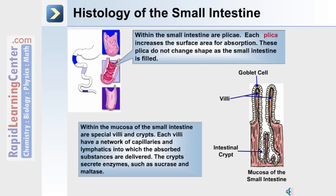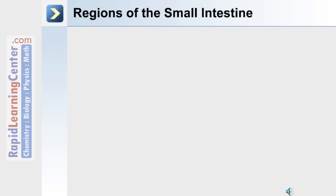Shown on the right side of the slide is a diagram of a villus, goblet cell, and intestinal crypt. The crypts secrete enzymes such as sucrase and maltase. These enzymes are necessary for the digestion of macronutrients into micronutrients.